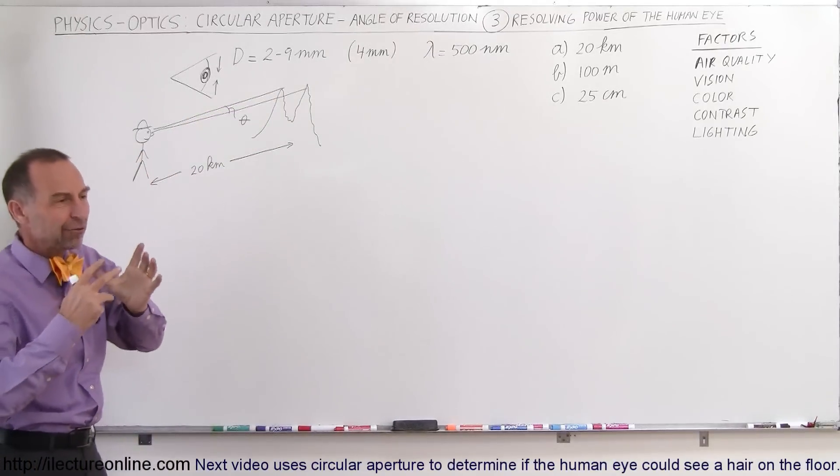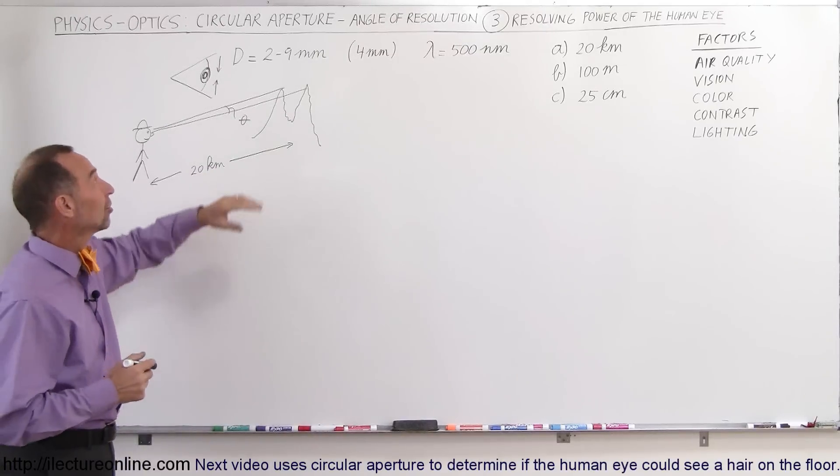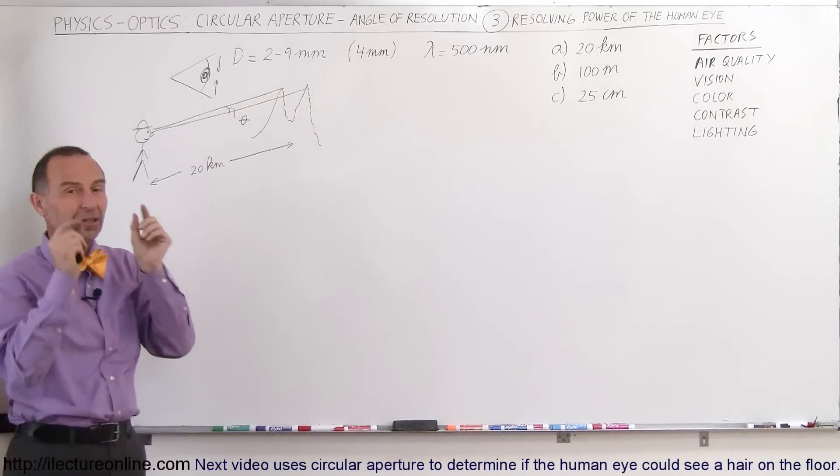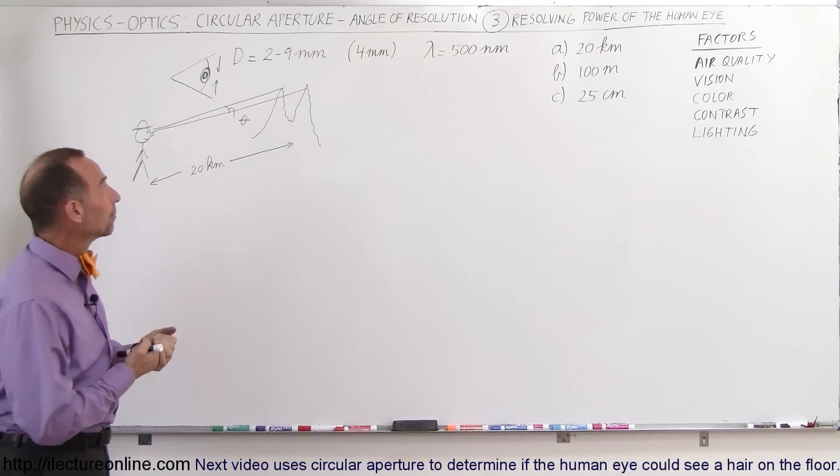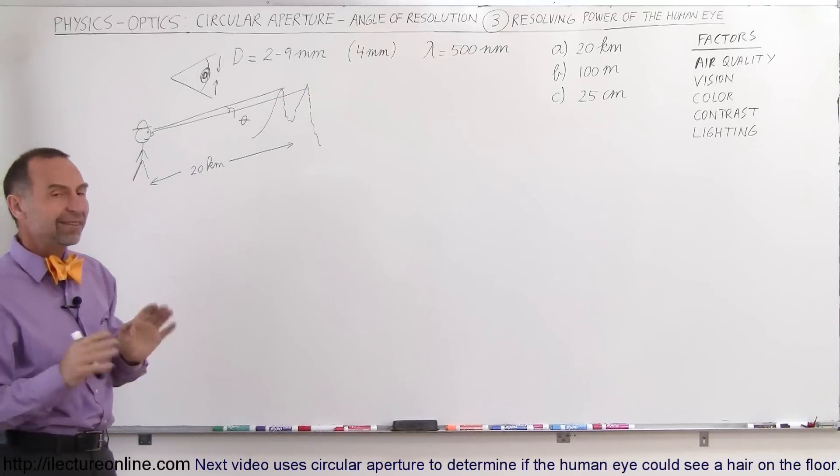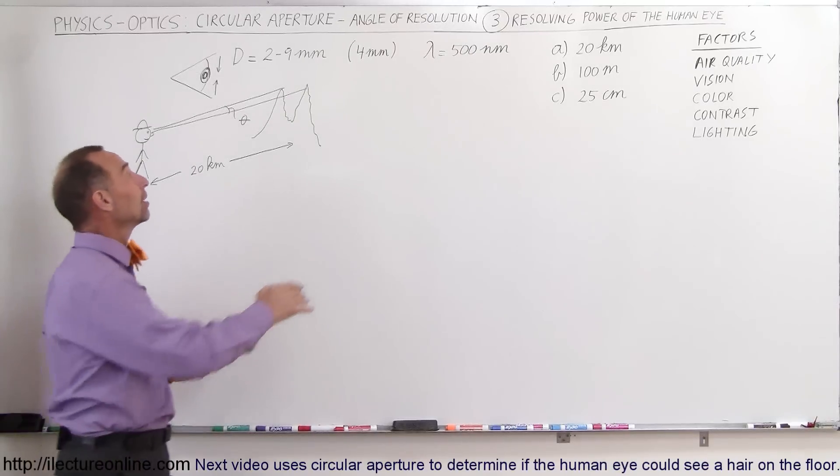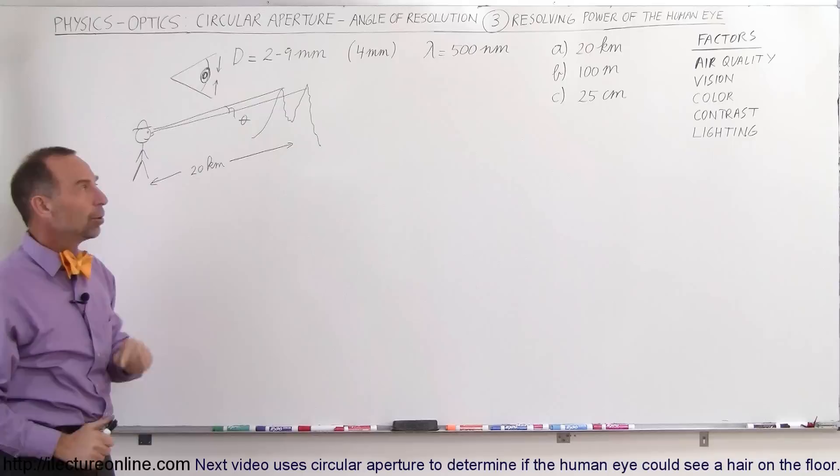9 millimeters typically for younger people where the pupil can really dilate in very dark conditions and 2 under very bright conditions when the pupils become very small. Of course, age and size and so forth, there's quite a variation. But let's say for the sake of our problem here, let's assume that the average distance of 4 millimeters is about the right size for the pupil.